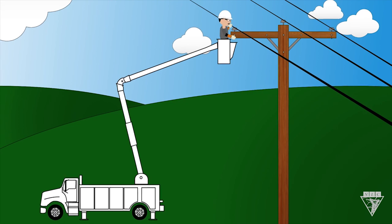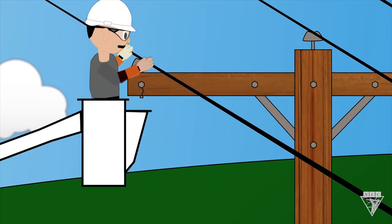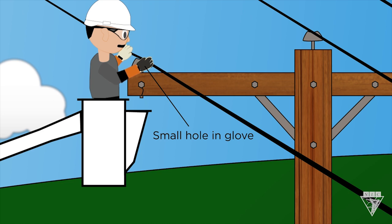In this graphic, the worker is wearing a rubber glove with a hole in it as he's working on the exposed phase. Although the bucket he's standing in has isolated him, he isn't insulated because the integrity of his rubber glove has been compromised.